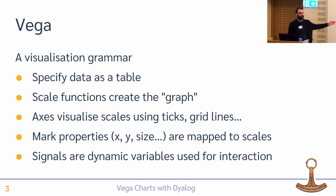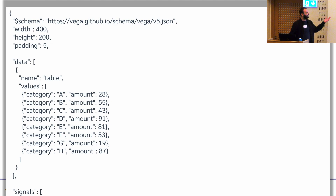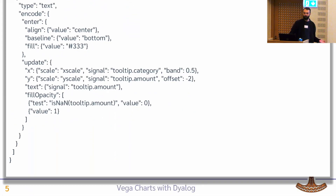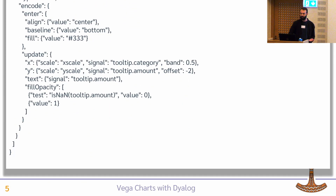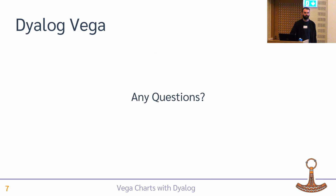Vega also has some interactivity features that I won't go into. The specifications in Vega are expressed in JSON — you go on the Vega site, read the documentation, put the specification together, and then call quad JSON. So that's the interface.